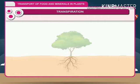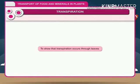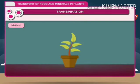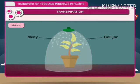Transpiration. Activity: To show that transpiration occurs through leaves. Method: Take a well-watered potted plant on a glass plate and cover it with a dry bell jar. The apparatus is made air-tight using Vaseline. After some time, the bell jar becomes misty and a few small droplets will be seen on the inner surface of the bell jar. Result: This shows that water vapor formed during transpiration has condensed on the inner surface of the bell jar in the form of droplets.